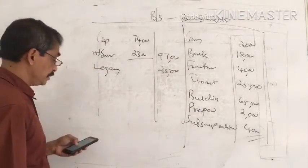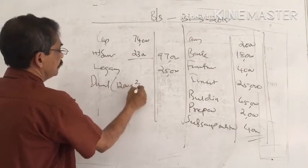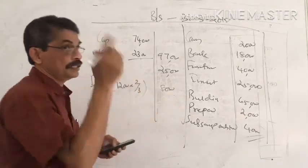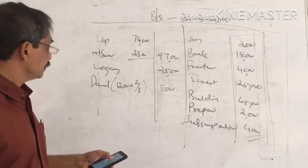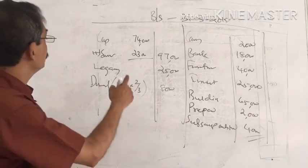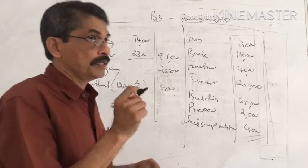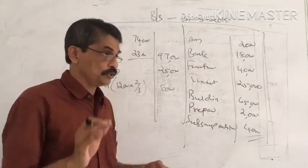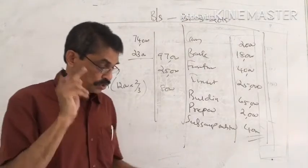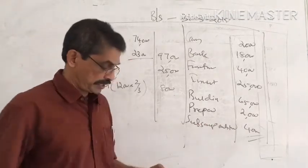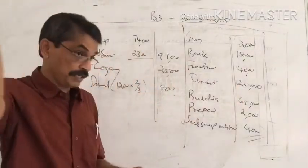We have to account for the donation: one-third of Rs. 12,000 goes to the Income and Expenditure account as income, and two-thirds goes to the capital fund in the balance sheet. The legacy, capital fund, and surplus are all recorded appropriately in the closing balance sheet.